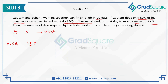Let G be the number of units done by Gautam in a day and S be the number of units done by Suhani in a day. The sum of the adjusted values must equal the original sum G plus S. This will give us a clear relationship between G and S.